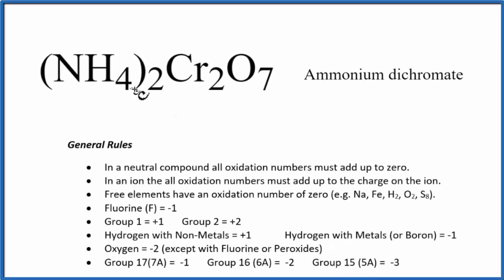In this video, we'll figure out the oxidation numbers for each element in NH42Cr2O7, ammonium dichromate. This one is rather involved, but it's pretty straightforward if you break it down into steps. So let's do that.